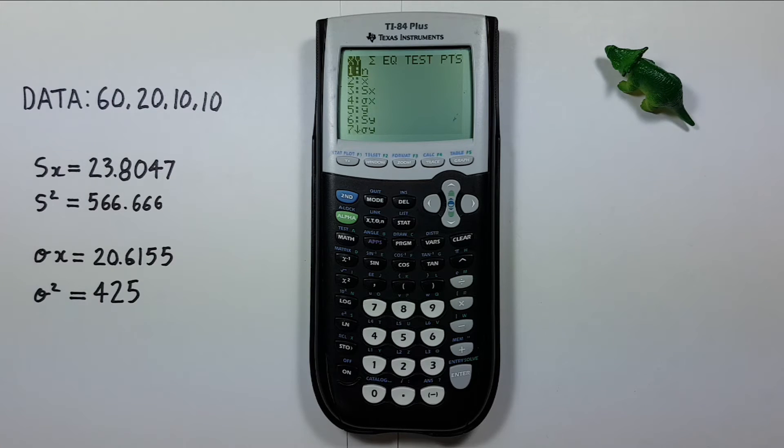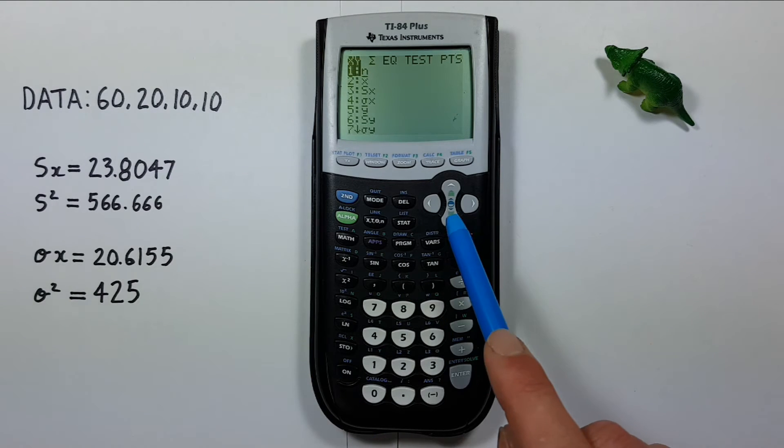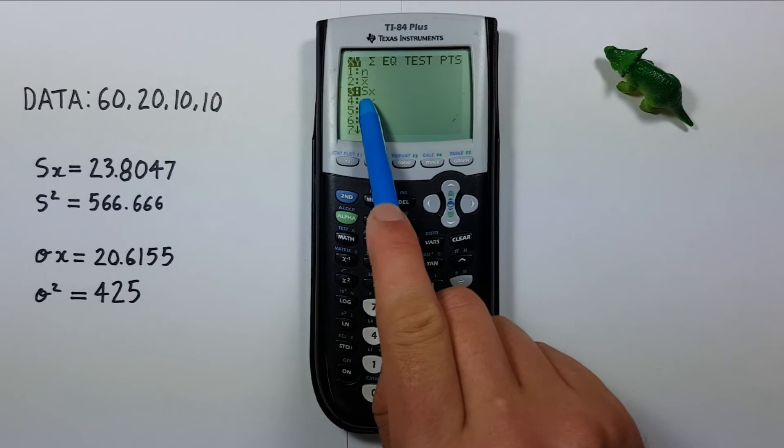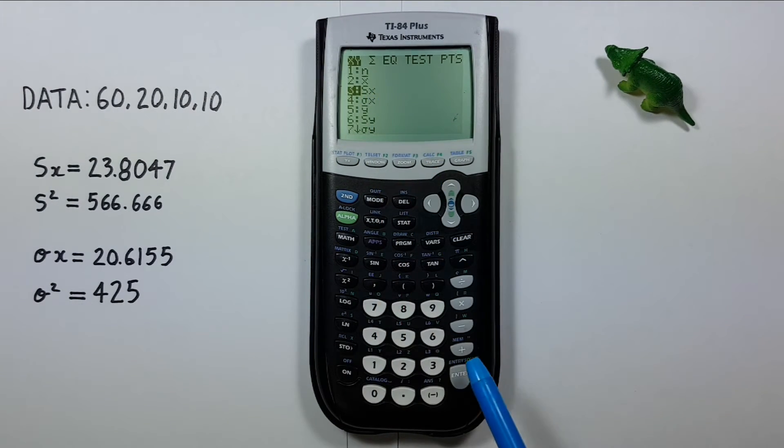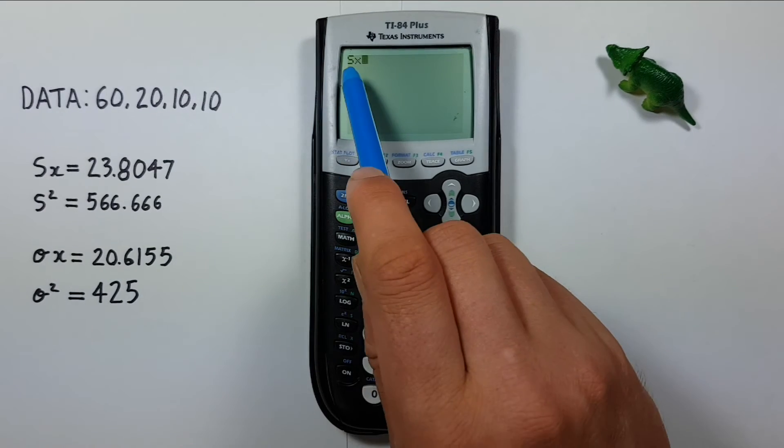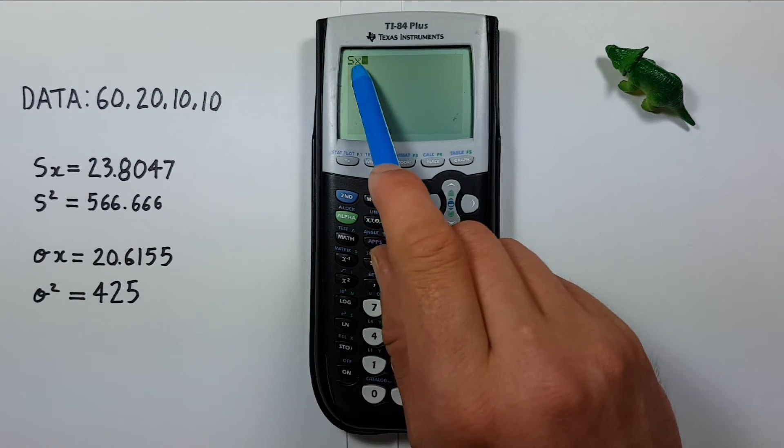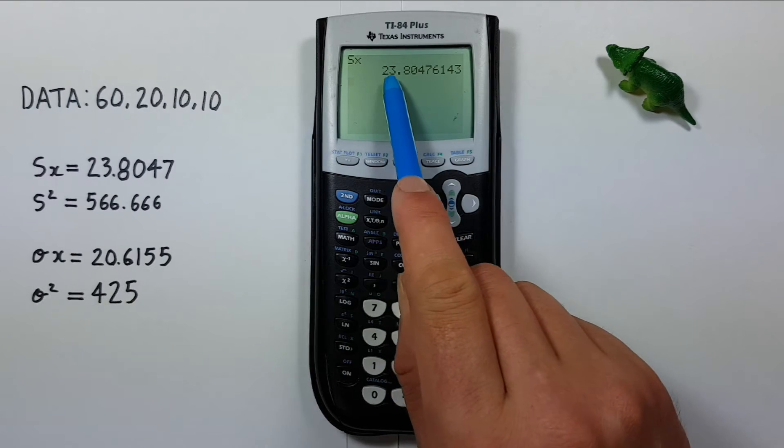Let's say we want to find the sample standard deviation variance. Well to do that, we can scroll down to the large sigma x or sample standard deviation and select it. We see the sigma x is now on our screen. And if we press ENTER, we see we get the value.